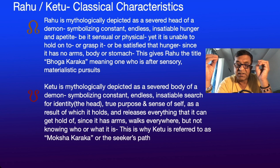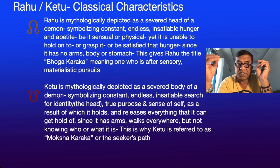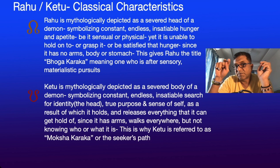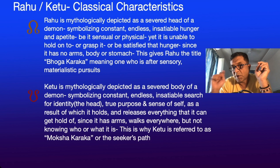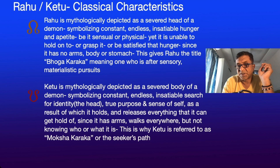Since Ketu has arms and walks everywhere, it goes through life — walking from place to place, through people, situations, and circumstances — but not knowing who or what it is. It doesn't have a head. This is why Ketu is referred to as Moksha Karaka — the Seeker's Path — the one energy in us which seeks something. This is the classical interpretation, and now we shall see how it plays out in the modern interpretation.